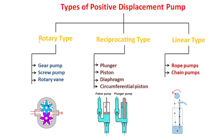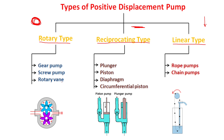The first group is the rotary type, group number two is the reciprocating type, and group number three is the linear type. Rotary type means we have rotary motion or rotation. Reciprocating type means we have reciprocating motion. Linear type means it moves linearly in one direction — it's not oscillating left and right like the reciprocating type. For the rotary type we already talked about gear pumps; we also have screw pumps and rotary vane pumps. For reciprocating types we have the plunger pump, piston pump, diaphragm pump, and circumferential piston pump.